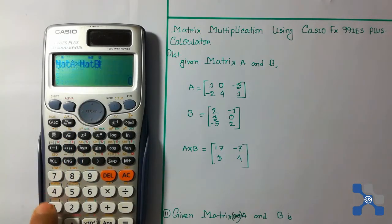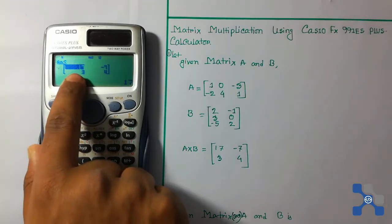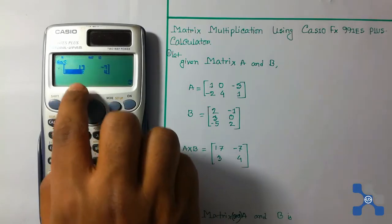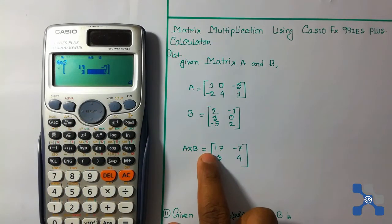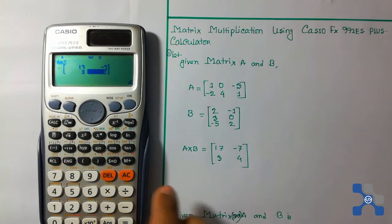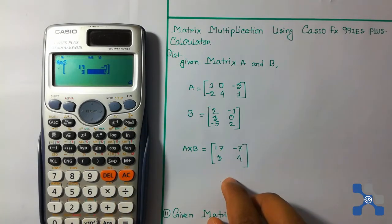Press 4 and now press the equal button. Now we see the resultant matrix: 17, -7, 3, 4. Our result is 17, -7, 3, 4. We can see that the answer is the same.